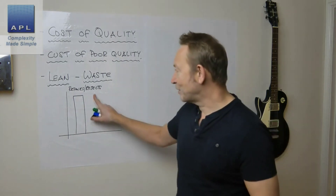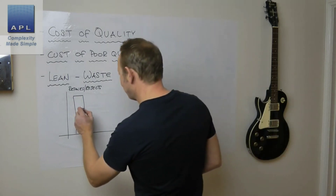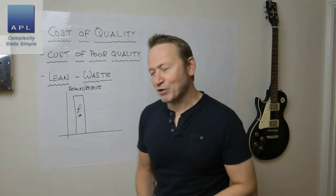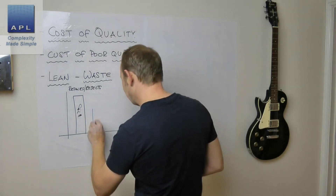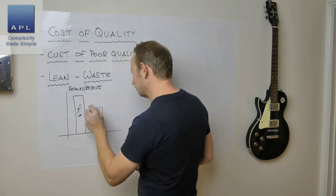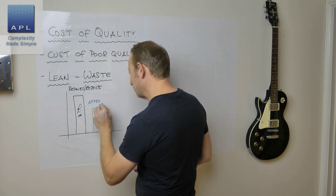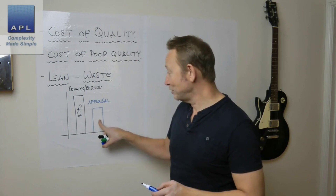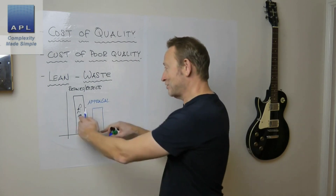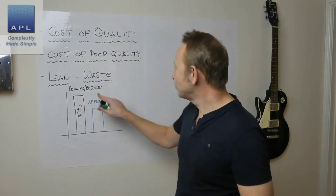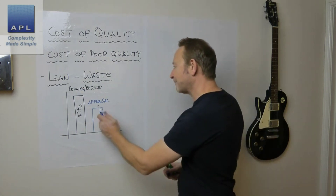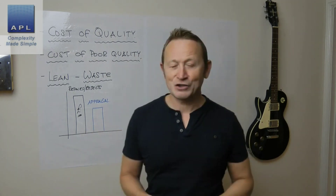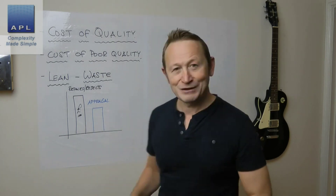The first column covers rejects, reworks, remakes — anything in the 'R' category. We calculate in money what these mistakes are costing us. The next column is the method typically used to try to prevent defects: inspection. Inspection doesn't prevent defects, it tends to find them. So the more you inspect, the more you find — making both columns big and costly.